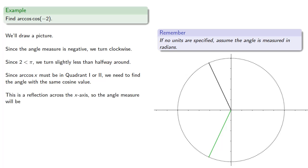The angle measure will be the same, but since we're now measuring it counterclockwise, it's going to be positive. So the arc cosine of the cosine of negative two will be two.